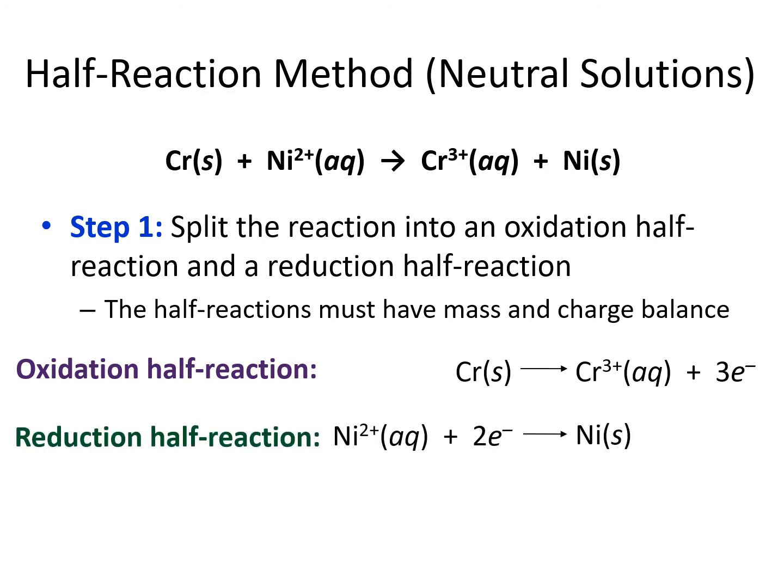For the reduction half-reaction equation, nickel 2+ is gaining 2 electrons to become the nickel solid. We write it the same way as in our original equation — nickel 2+ on the left and nickel solid on the right — and fill in the electrons where they need to go. In this case, they go on the left to balance out the plus 2 on the nickel ion, giving us zero overall charge on the left and zero overall charge on the right. Now, the number of electrons lost by chromium is going to have to equal the number of electrons gained by the nickel, because these reactions are happening together — the loss of electrons by one enables the gain of electrons by the other. That number of electrons has to be the same in both half-reactions, but right now it's not.